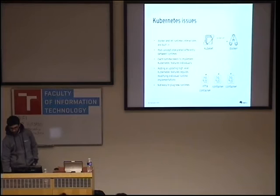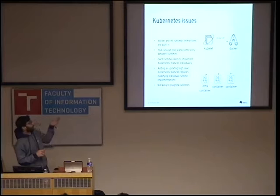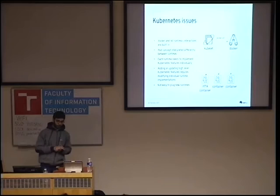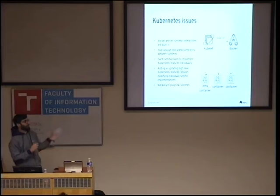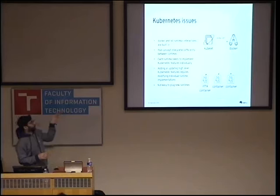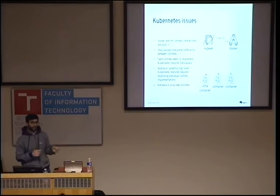CRIO started because Kubernetes has some issues when it comes to container runtimes. Specifically Docker and Rocket runtimes interaction are built into the Kubelet, so they are the only supported runtimes right now. Also, the Kubernetes pod concept is interpreted differently between container runtimes — for Docker it's an infrastructure container, but for other runtimes like Hyper it could be a virtual machine. Since the interaction between runtimes and the Kubelet is built into the Kubelet source code, it leads to a sort of maintenance burden in Kubernetes when it comes to implementing new features, as that requires modifying each runtime in the Kubernetes source code, which is a really huge effort.